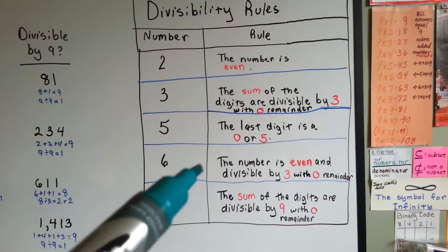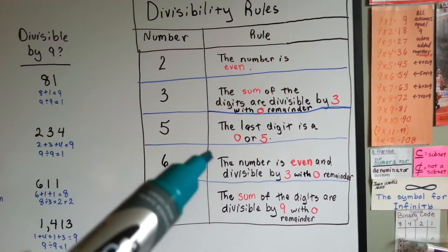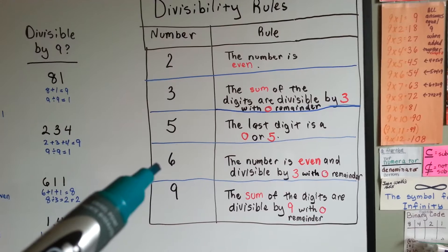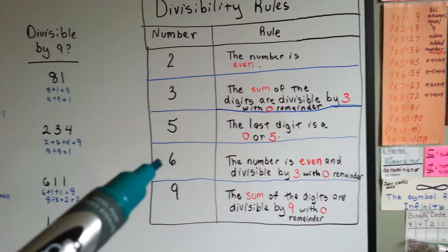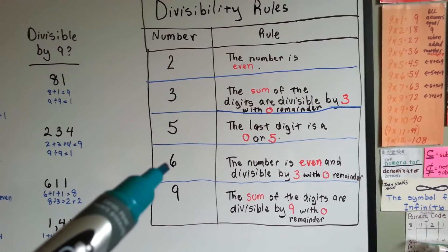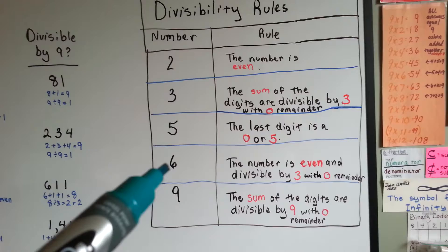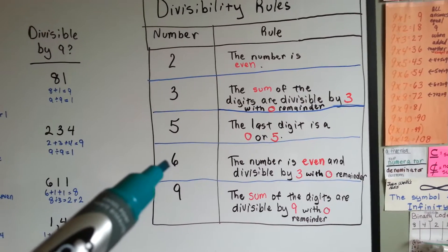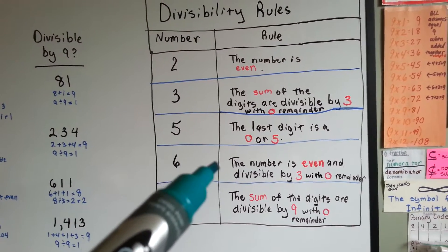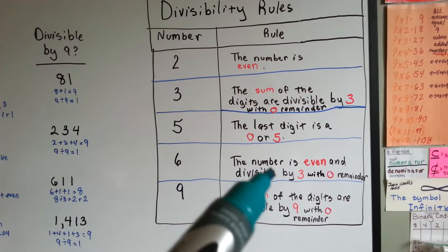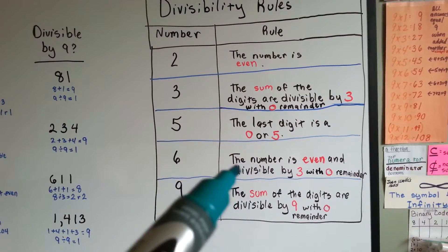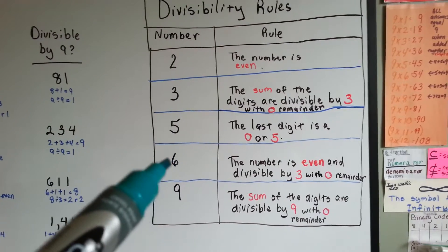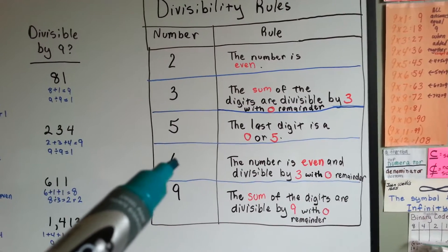Here's the rule for 6. If the number is even — remember your even and odd numbers: 1 is odd, 2 is even, 3 is odd, 4 is even, and it goes back and forth — if the number is even and you can divide it by 3, it's divisible by 3 with a 0 remainder, then you can divide it by 6.